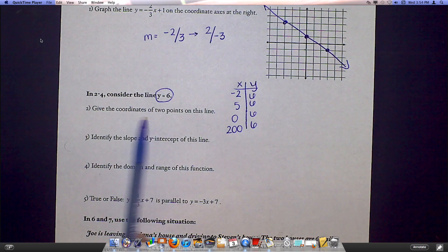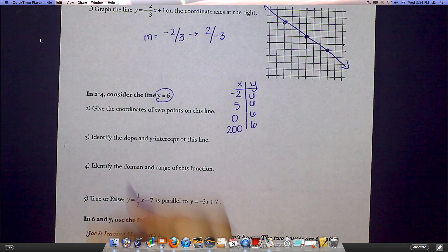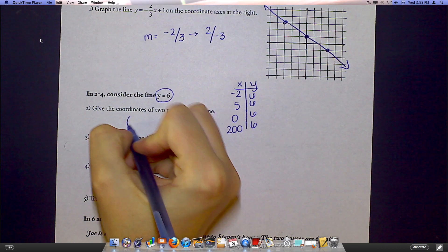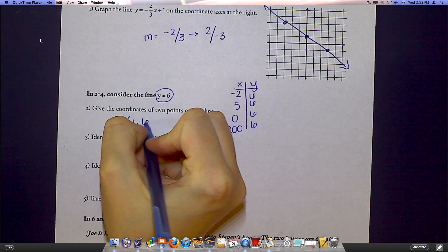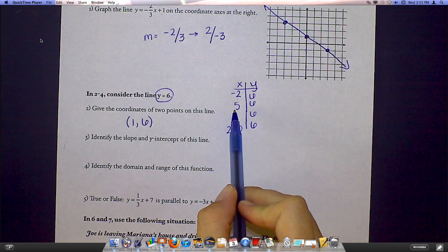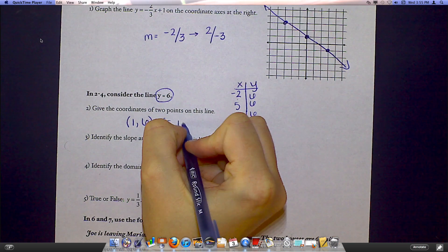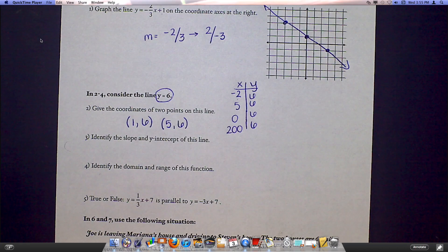So in number two, when I want two points on this line, all I have to do is come up with a couple of points that have any x value I want, and then my y value would be equal to six. I could even take them right out of here. Negative two, six. Five, six would work. Anything you want, just so long as the y number is six.